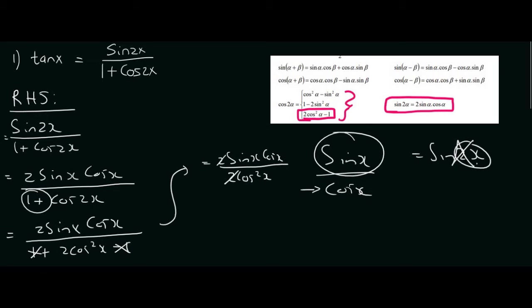This cos x can cancel with one of the cos x's at the bottom, and so we're left with sin x over cos x, and there we go we have it as tan x. So then we have to say therefore left-hand side is equal to right-hand side.